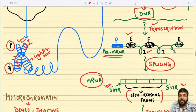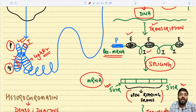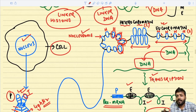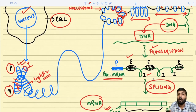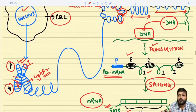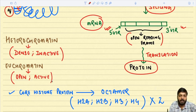In the euchromatin, the open DNA undergoes transcription to form what is known as pre-mRNA. After transcription, a precursor mRNA is produced comprising both exons and introns. After splicing, we get the mature mRNA having the 5' UTR and 3' UTR areas, and then there is an open reading frame which undergoes translation to give rise to a particular protein.